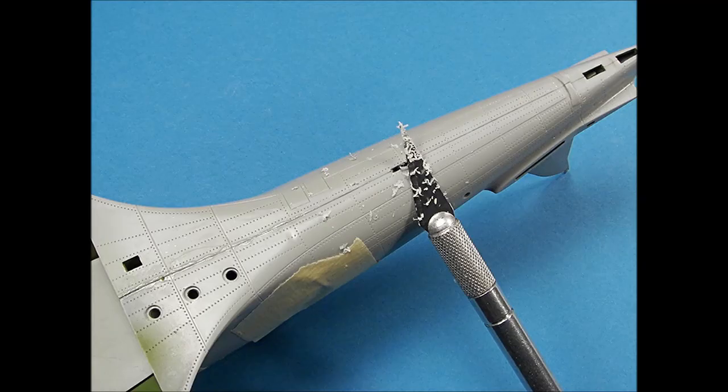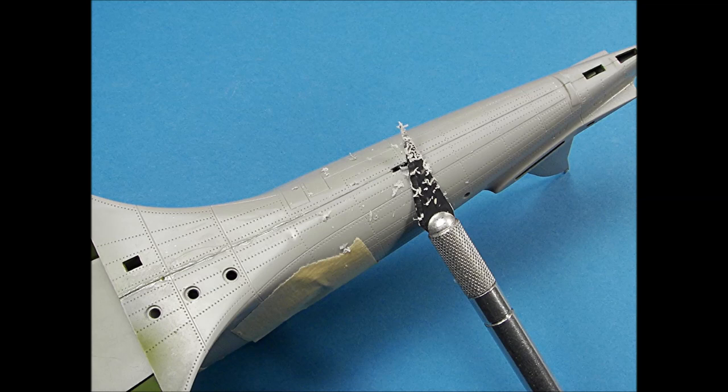On seam areas that are curved, a number 11 X-Acto blade works very well to carefully and surgically scrape down the super glue along a seam line.